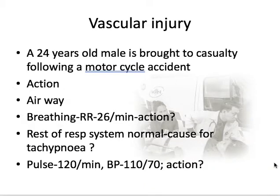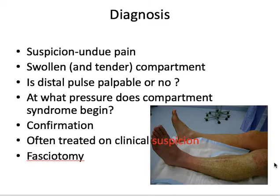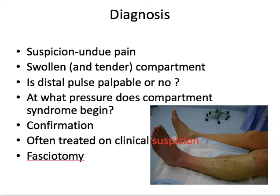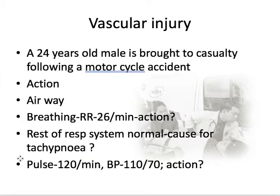So that is about compartment syndrome. For external compression, when it is suspected, always remove the external plaster cast. For other forms of compartment syndrome, at suspicion do not delay performing a fasciotomy. The last form of acute limb ischemia is vascular injury — so look at this scenario.